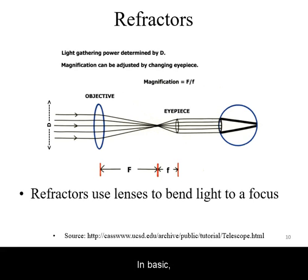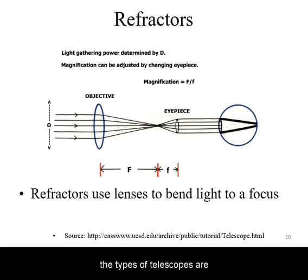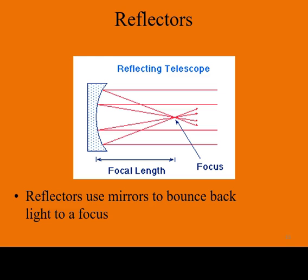In basic optical astronomy, the types of telescopes are refractors, which use lenses and work by refracting light, and mirror telescopes that redirect light to a focus using reflection.